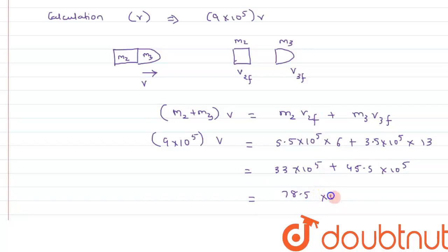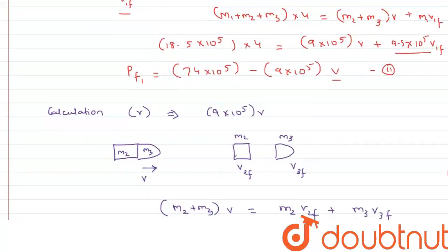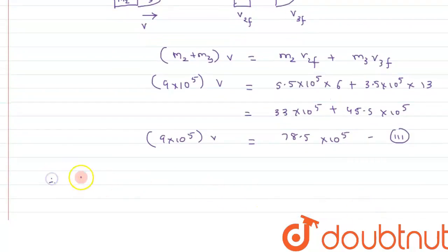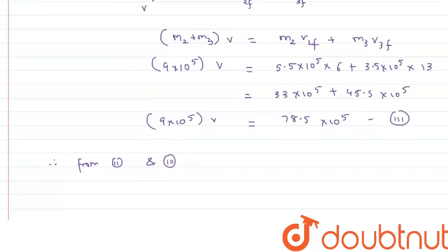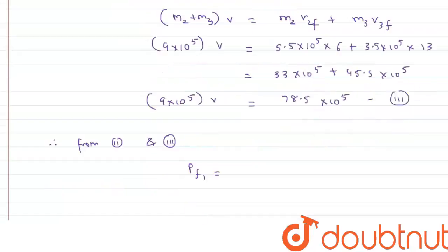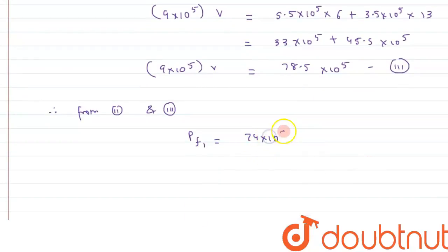Summing these up: 33 × 10⁵ + 45.5 × 10⁵ = 78.5 × 10⁵. So 9 × 10⁵ × v = 78.5 × 10⁵. This is equation number 3. Now we can substitute this result back into equation 2 to find the final momentum of the first stage rocket.